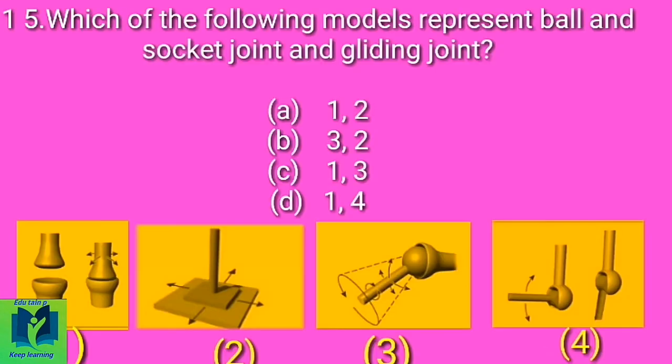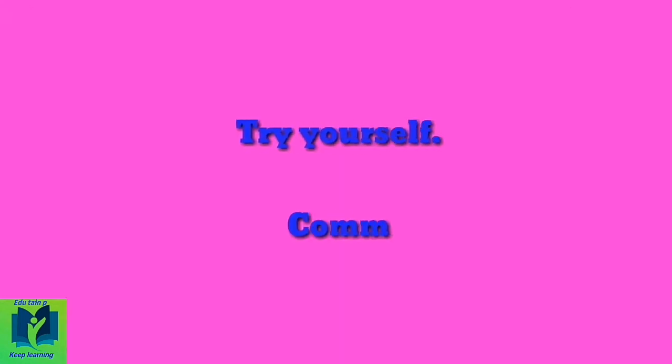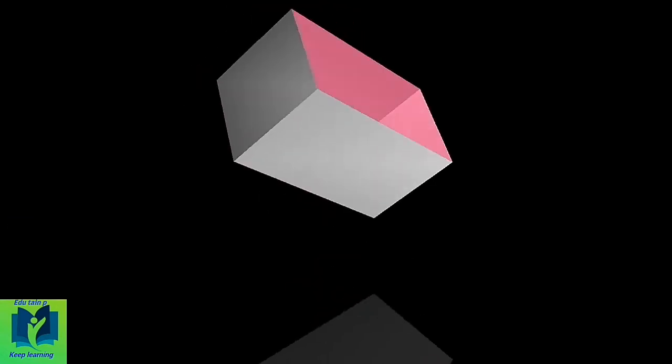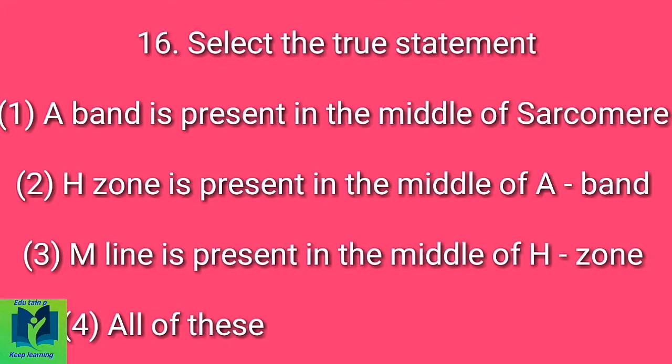Which of the following models represents ball and socket joint and gliding joint respectively? Select the true statement.